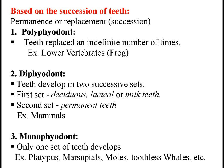The next one is monophyodont. Mono means single, phyo means growth, odont means teeth. In some mammals such as platypus, marsupials, moles and toothless whales, only one set of teeth develops during its lifetime. Such condition is known as monophyodont.